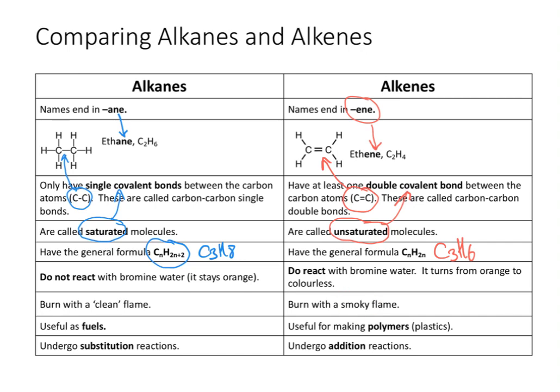Alkenes burn with a smoky flame — thick smoke tends to come off them — which means they're not very useful as fuels. However, they are very useful for making polymers, which we commonly know as plastics, and you'll learn more about that as you go through the topic. Alkenes also undergo addition reactions: the double bond in the middle can break and accept other atoms such as chlorine, bromine, or additional hydrogens. Hopefully that's been a useful summary of alkanes and alkenes.